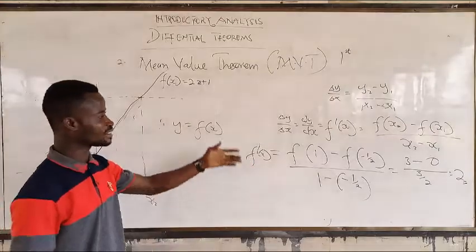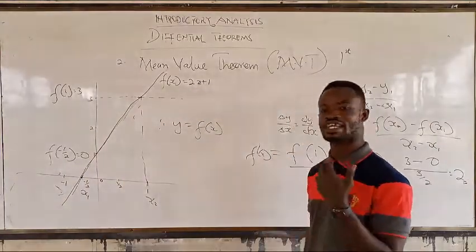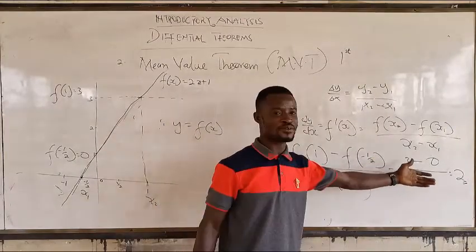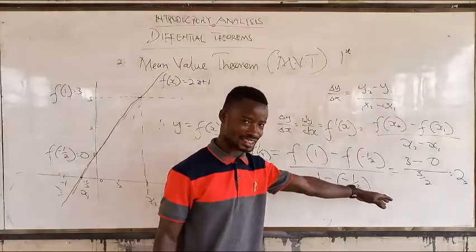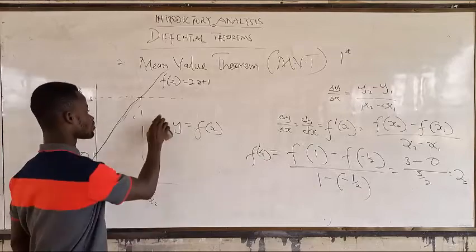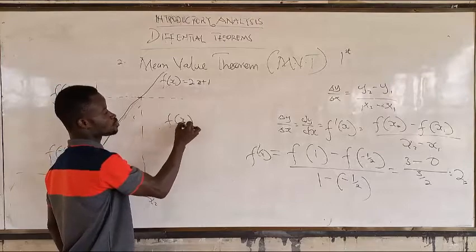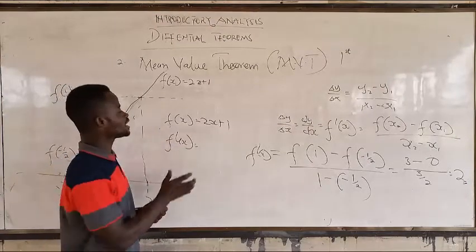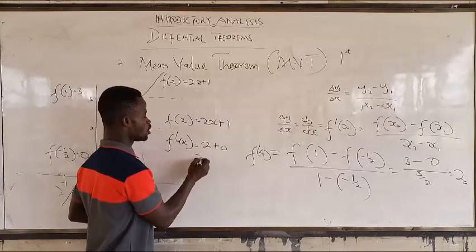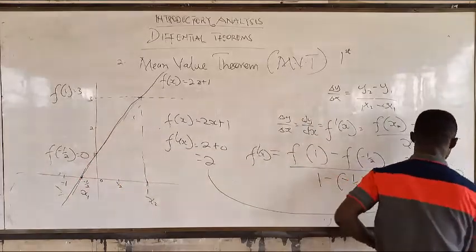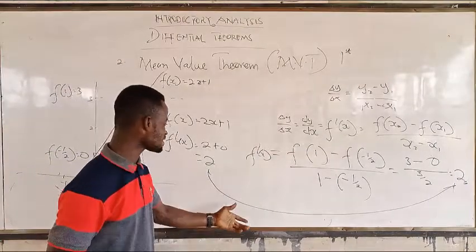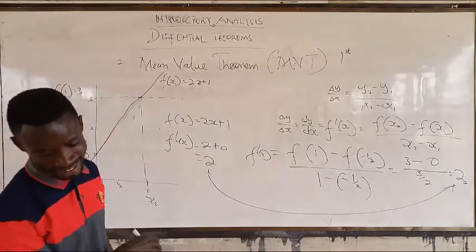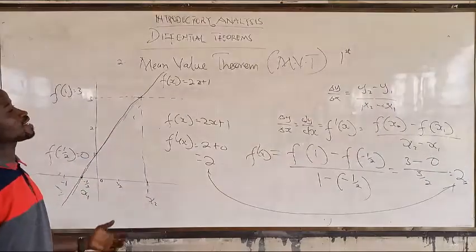You can see that the gradient, or the slope, or dy/dx, or the change in y over change in x, or f prime, is giving you 2. This is the derivative. Now let's look at something: we have f(x) equal to 2x plus 1. When you take the derivative of this, you get 2 plus 0, which is 2 — exactly the same as what we computed. That's the beauty of the Mean Value Theorem.